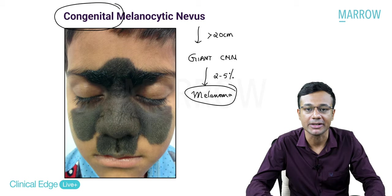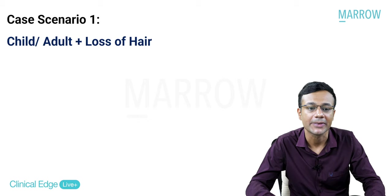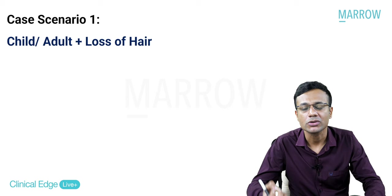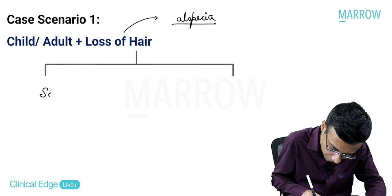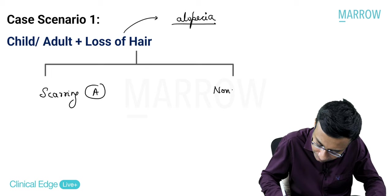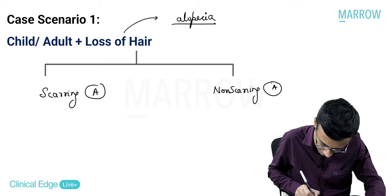Next, appendages and disorders. Case scenario: a child or adult presenting with loss of hair. Loss of hair is called alopecia. We broadly classify into scarring alopecia and non-scarring alopecia.